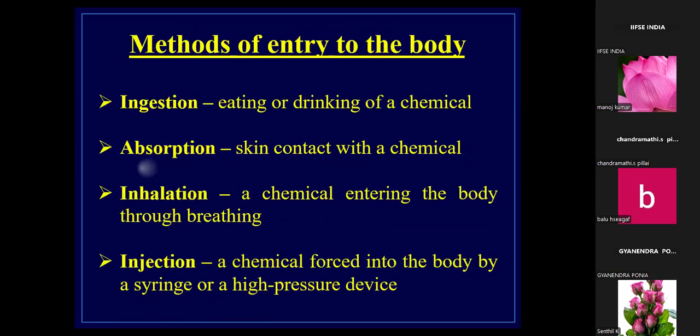The main routes by which chemicals enter the body are: first, ingestion — by eating or drinking the chemical; second, absorption — when chemicals come in contact with skin, which has the ability to absorb certain chemicals; third, inhalation — through breathing; and fourth, injection — when a chemical is forcibly injected into the body using a pressure syringe or high-pressure device.